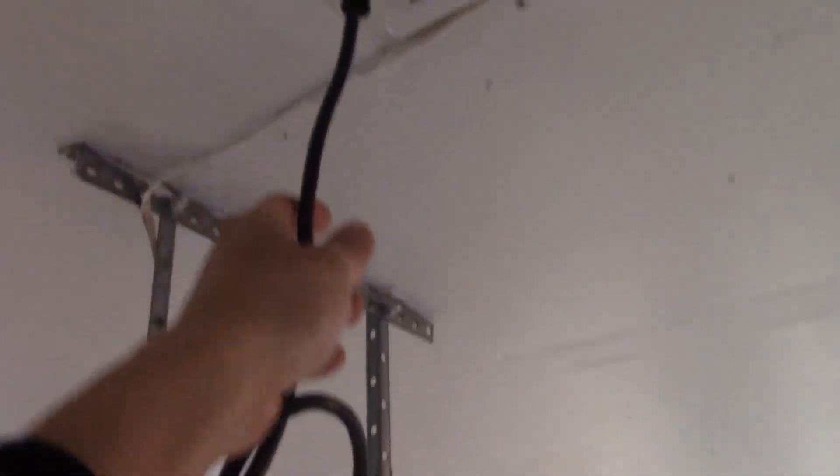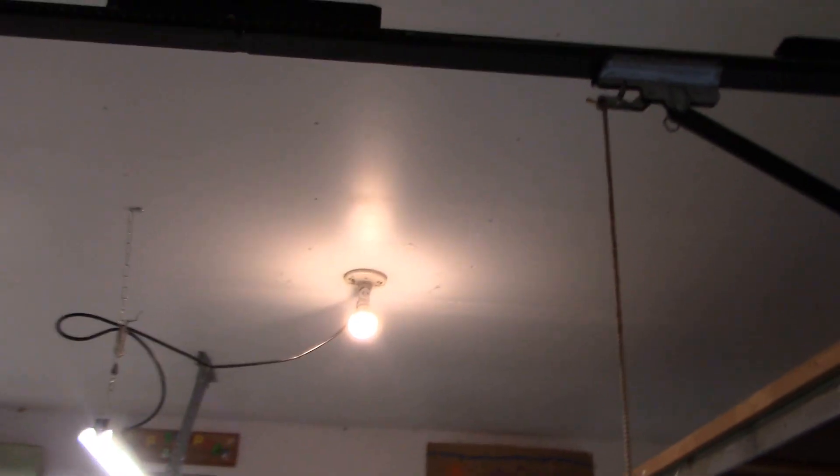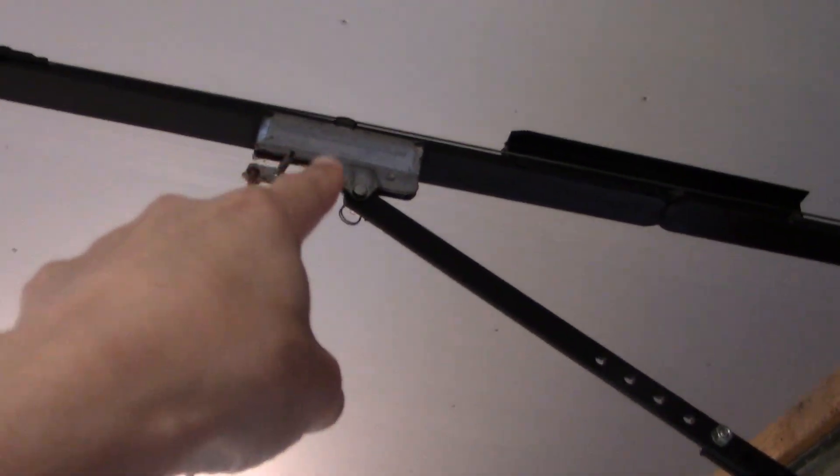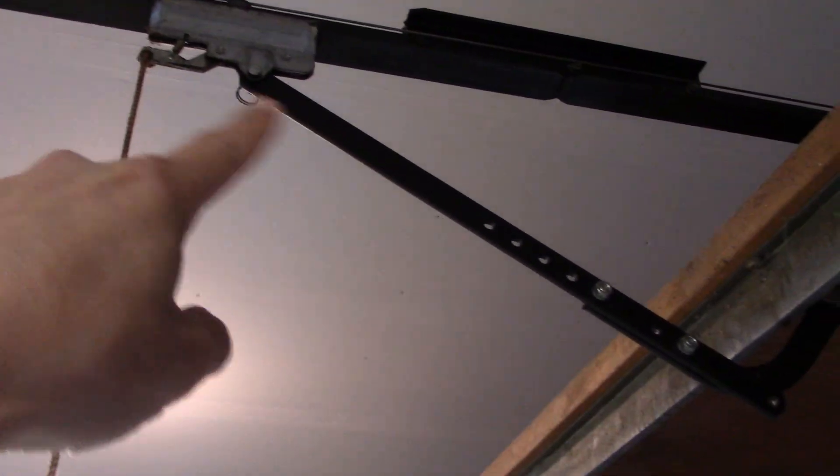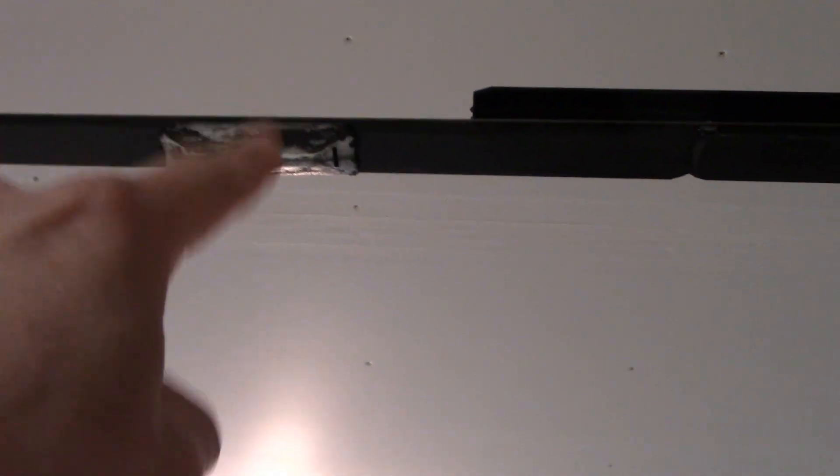The first thing we're going to do, let's go ahead and unplug this just for safety. And then let's come down here and we are going to disconnect the trolley from the garage door. Just go ahead and pull this and then get this out of the way. I can actually just pull this down manually. So now the trolley is disconnected from the garage door.